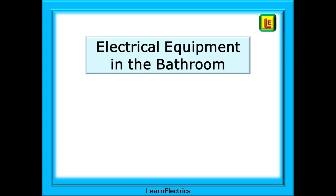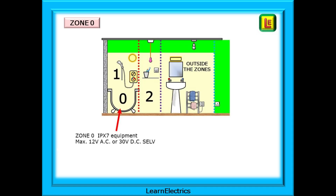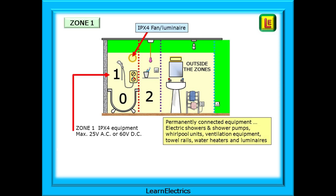What electrical equipment can we install in the zones? What IP ratings and voltages? Starting with zone 0 inside the bathtub: only IPX7 equipment is permitted. Voltages are limited to a maximum of 12 volts AC and 30 volts DC — just a quarter of the normal extra-low voltage limits.